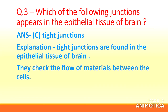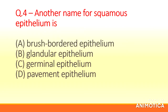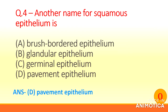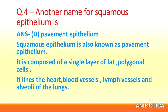Question 4: Another name for squamous epithelium is (a) Brush-bordered epithelium, (b) Glandular epithelium, (c) Germinal epithelium, (d) Pavement epithelium. Answer: (d) Pavement epithelium. Explanation: Squamous epithelium is also known as pavement epithelium. It is composed of a single layer of flat polygonal cells.